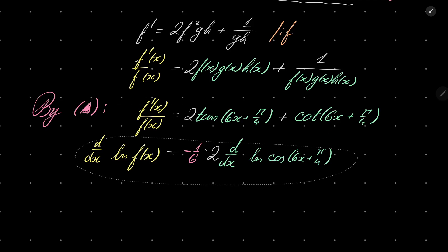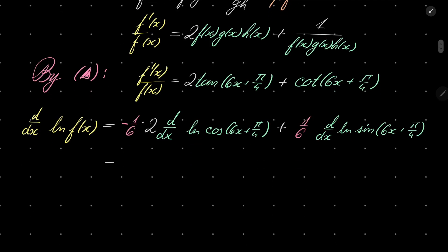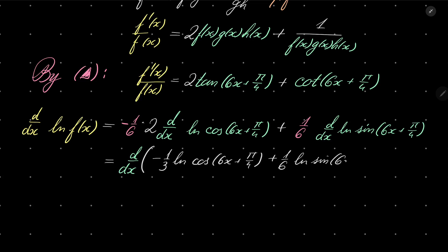And cotangent is the derivative of natural log of sine of 6x + π/4, with a chain rule factor of 6, so I need 1/6 in front. All in all, f'(x)/f(x) is the derivative of: minus 1/3 · ln(cos(6x + π/4)) plus 1/6 · ln(sin(6x + π/4)).